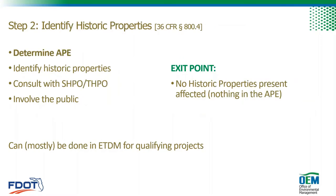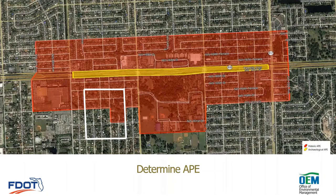In Step 2 we determine the APE, or Area of Potential Effect, conduct background review and field survey to identify cultural resources, and then evaluate those resources for significance. We will consult with DHR and involve the public. Most of this can also be done in ETDM for certain minor types of projects, but most projects will still require a field survey completed in PD&E.